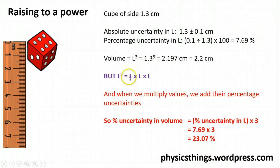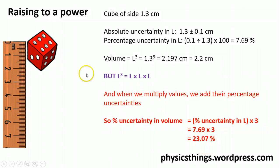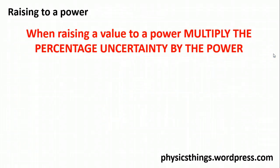Since L³ is just L × L × L, we effectively have a reading with an absolute uncertainty multiplied by itself three times. Just as when we multiply values we add their percentage uncertainties, here we have three lots of L, so we add the percentage uncertainty three times — which is the same as multiplying it by 3. So if you raise a value to a power, you multiply the percentage uncertainty in that value by the power.